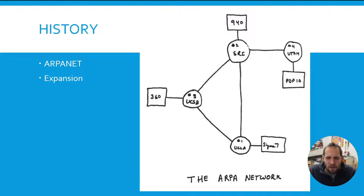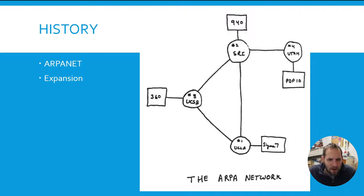The Internet started as ARPANET. ARPA was the Advanced Research Project Agency — DARPA is the new ARPA, really. This was a Department of Defense project back in the 1960s, and the goal was to create a communication system with multiple pathways, so a little bit of redundancy.